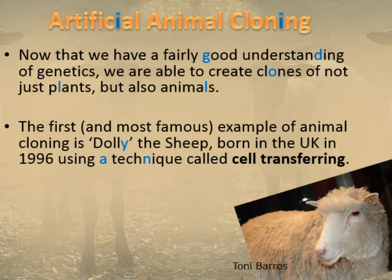The first and possibly most famous example of animal cloning is Dolly the sheep, born in the UK in 1996 using a technique called cell nuclear transfer. There you can see her — this is after she was dead; those are her taxidermied remains.